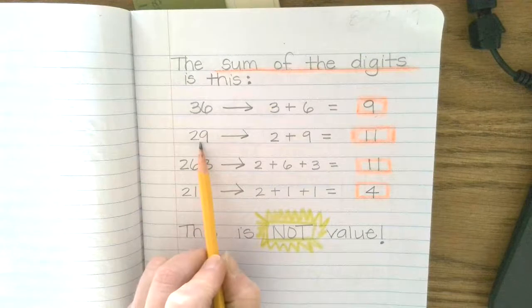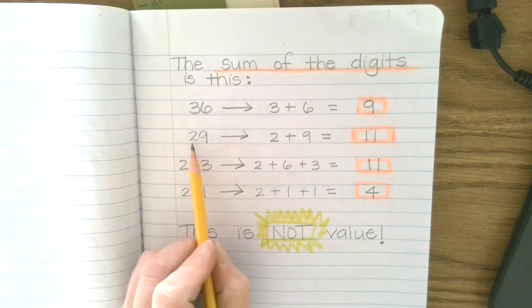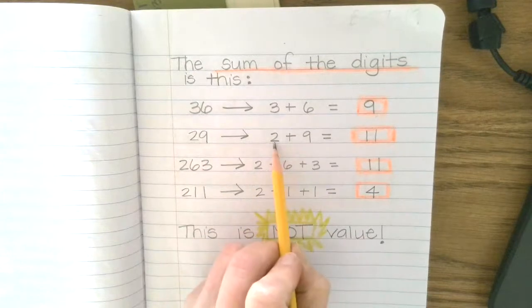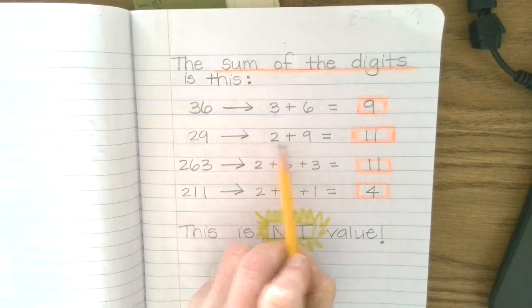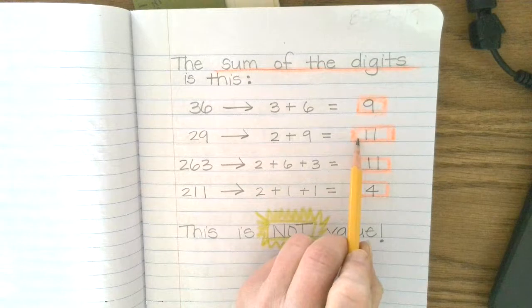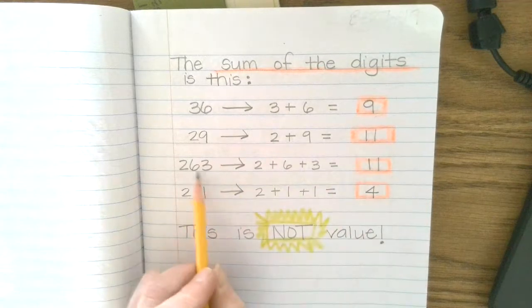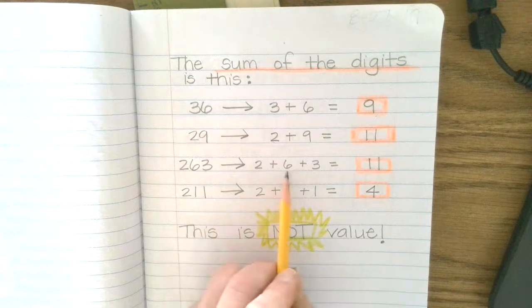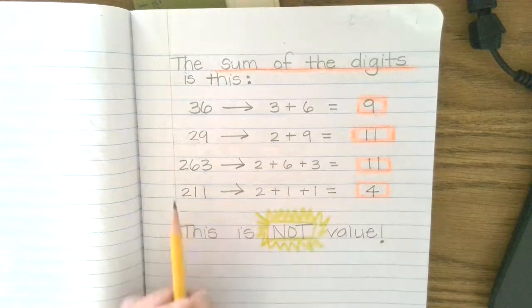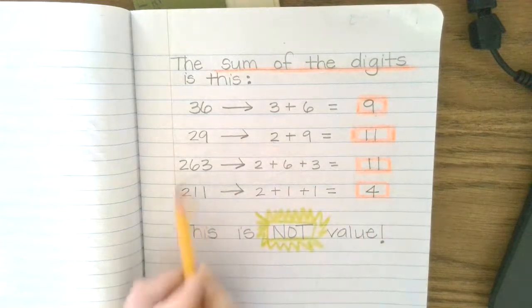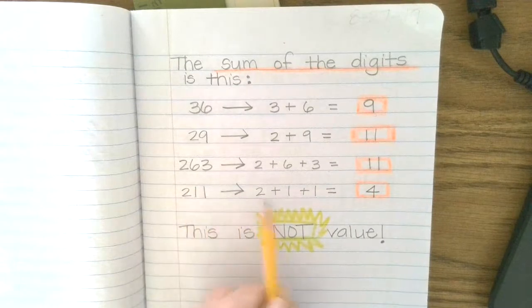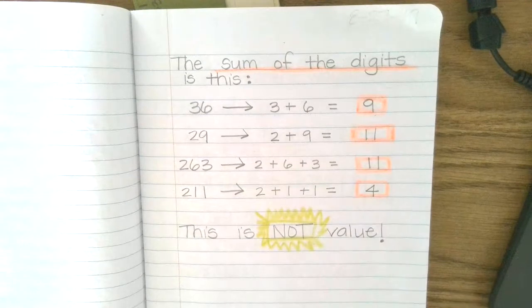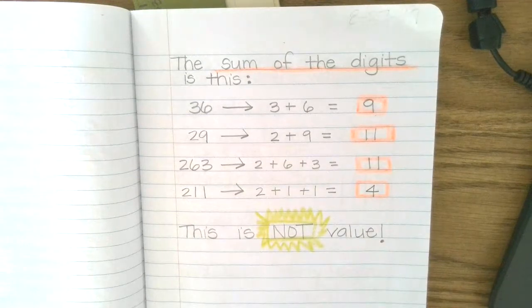For example, 29 is made up of the digits two and nine, and so I just add those together. Two plus nine is 11. 263, I just add up two plus six plus three and I get 11. And 211, I would just add up two and one and one and I'd get four. So that is called the sum of the digits.